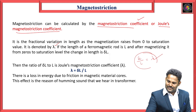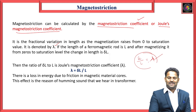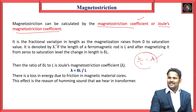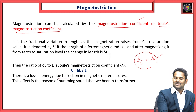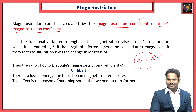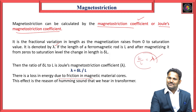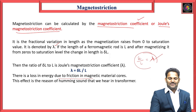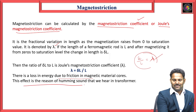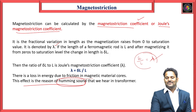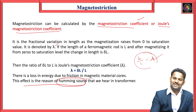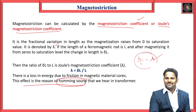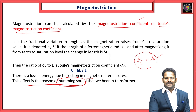There is a loss in energy due to friction in magnetic materials, especially in transformer cores. Due to this magnetostriction, a humming sound is produced in transformers. This is the magnetostriction effect.